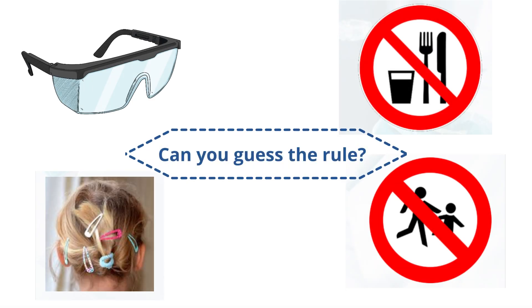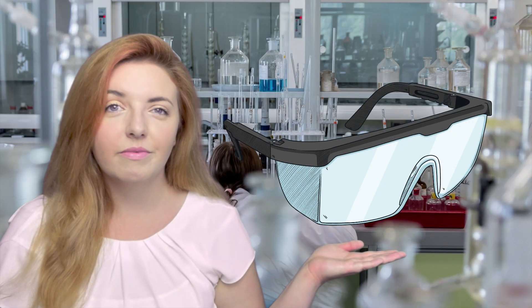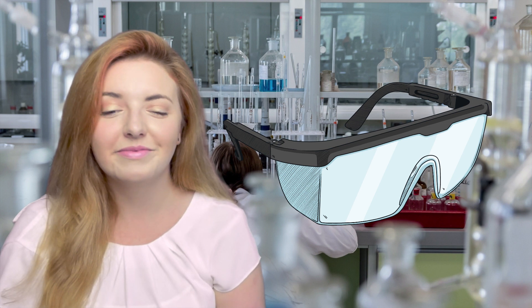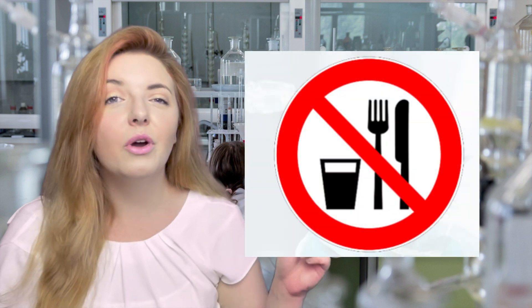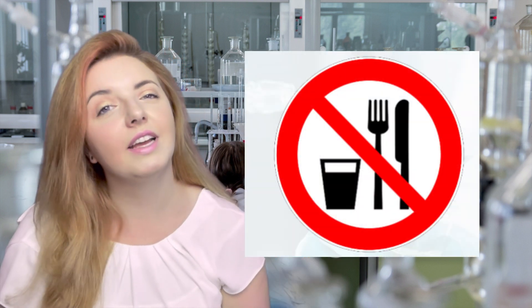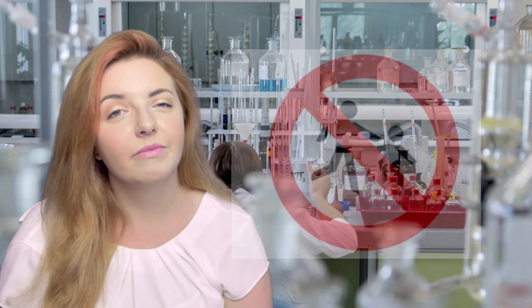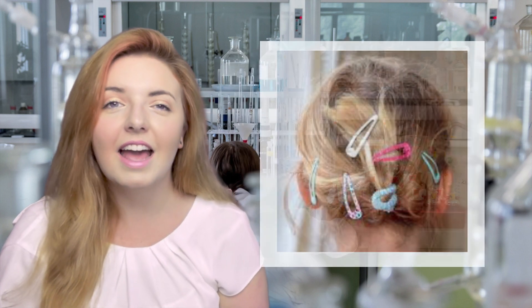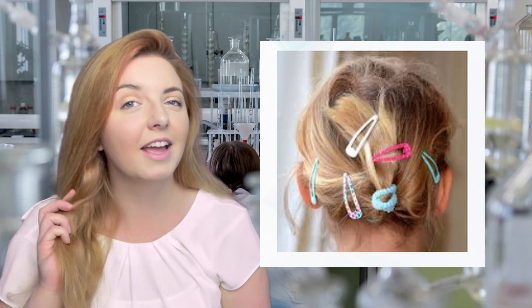Another way to stay safe in the lab is to have clear rules for everyone. Let's look at these images and see if we can guess the rule. Always wear safety goggles, no food or drink in the lab, no running, and always wear your hair tied back.